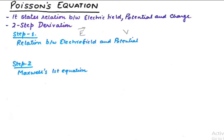That would be the first step of understanding. The second step is Maxwell's first equation which states that the divergence of d is rho v. These two steps can be thought of as the prerequisites of deriving Poisson's equation.